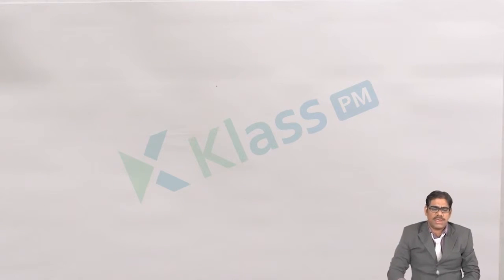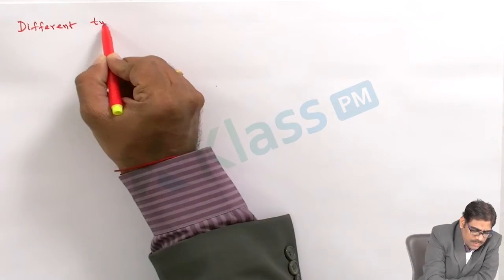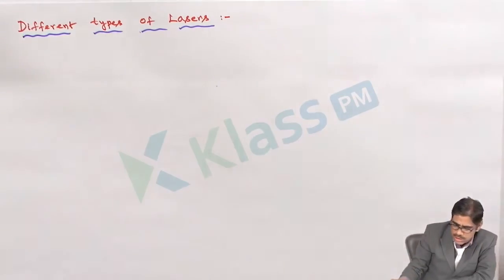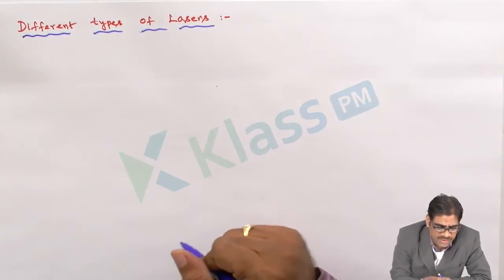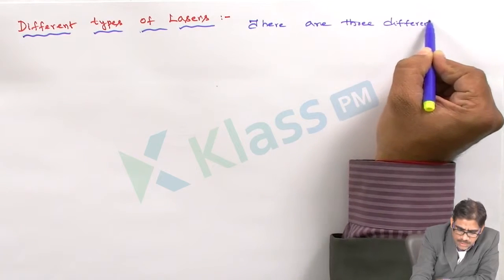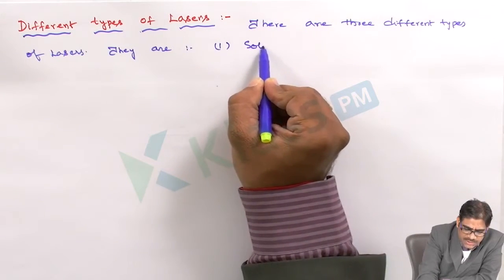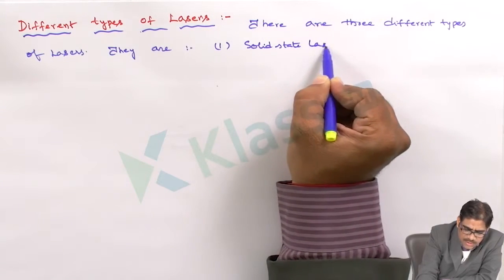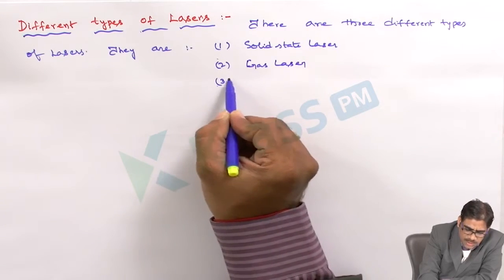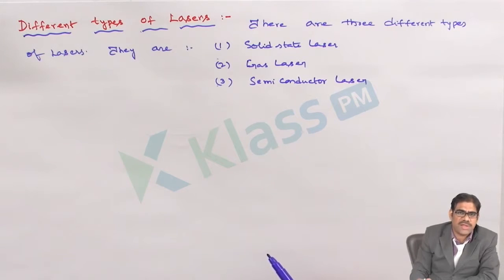Let us discuss about the different types of lasers. There are three different types of lasers. They are: number one, solid state laser; number two, gas lasers; number three, semiconductor laser. Now let us discuss about them one by one.